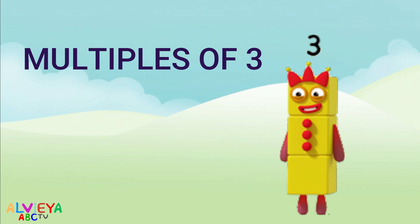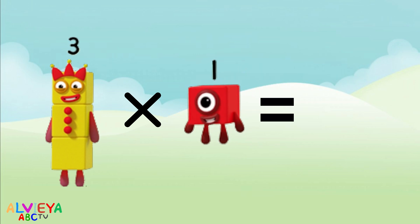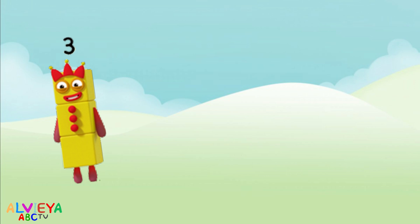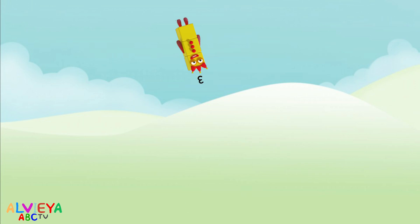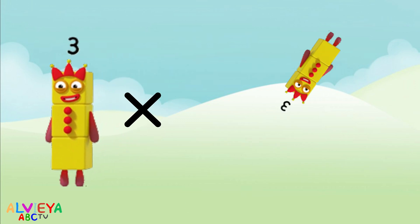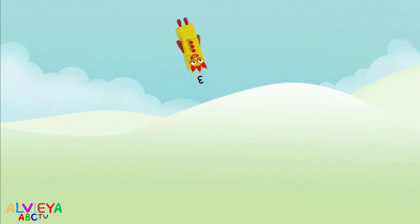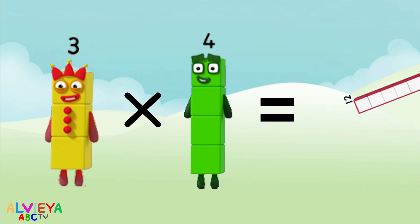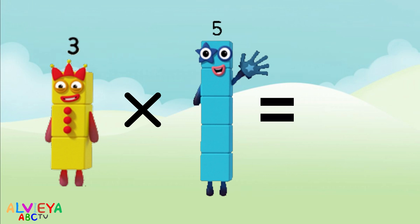Three times one equals three. Three times two equals six. Three times three equals nine. Three times four equals twelve. Three times five equals fifteen.